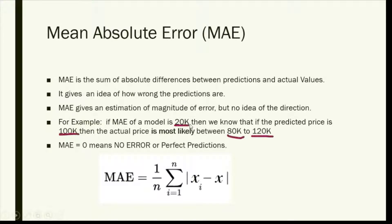Suppose if my model has a Mean Absolute Error of 20,000, then we know that it's a predicted price. Since it's a regression problem, we go with the predicted price. Suppose it's 100,000.